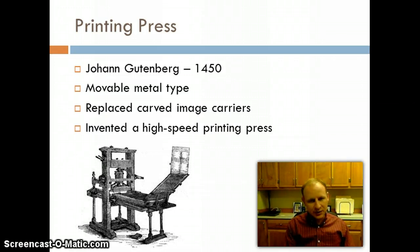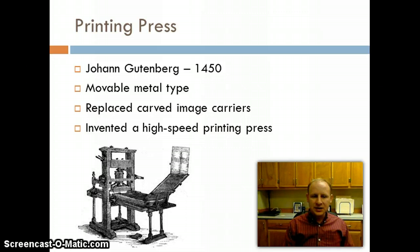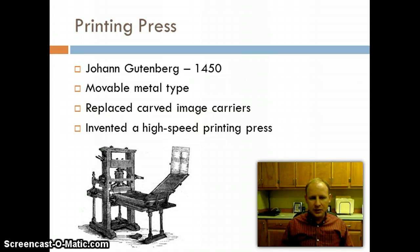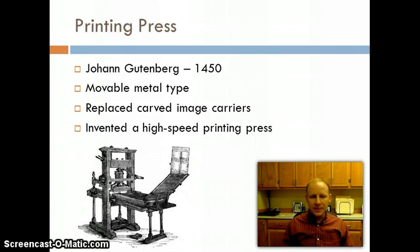The process of relief printing had been used for a long time — Gutenberg didn't necessarily invent it; that was done by the Chinese. What he did was use metal type for the images instead of wooden carved type. The metal would last much longer, could do more, and worked faster. He replaced carved image carriers with metal type and also invented a high-speed printing press, with letters carved into pieces of metal that could print onto a page quickly.